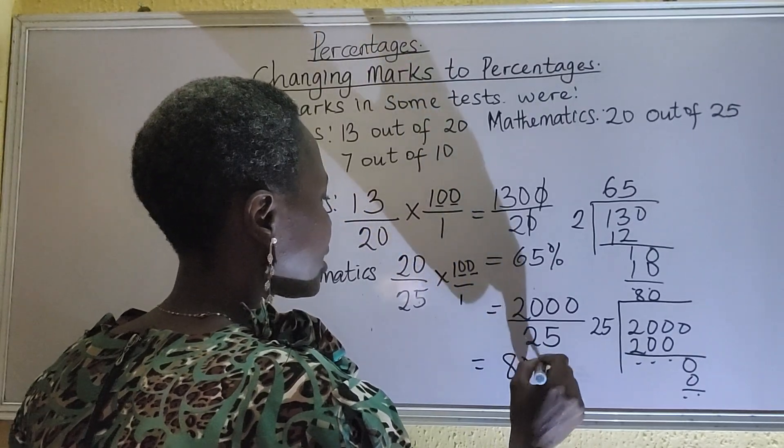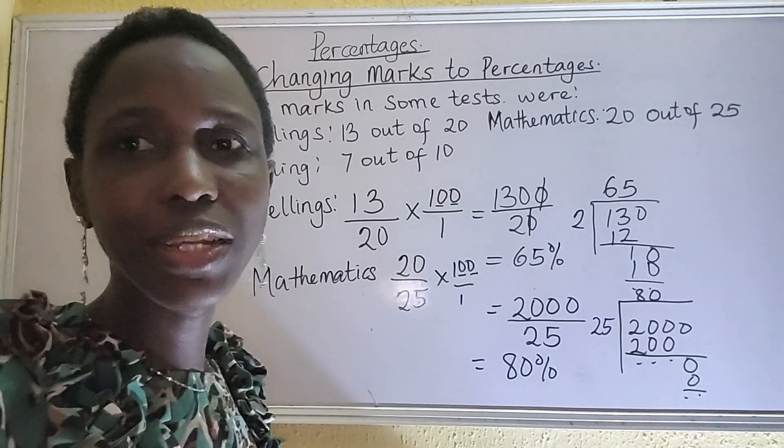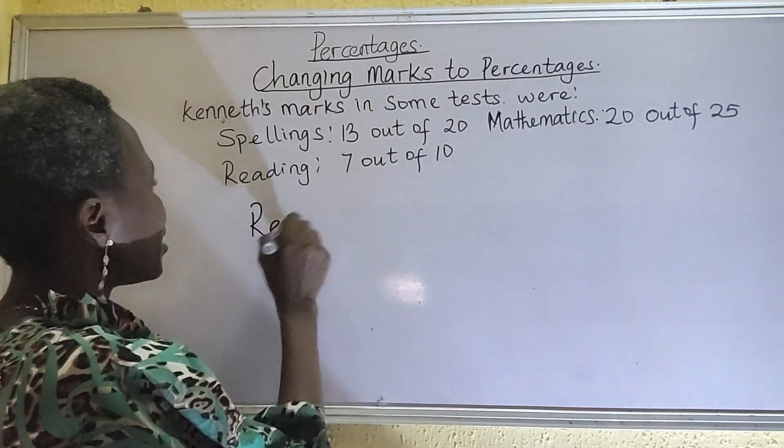So for mathematics, Kenneth got 80%. Wow. Awesome. Kenneth must be brilliant. We have reading left.